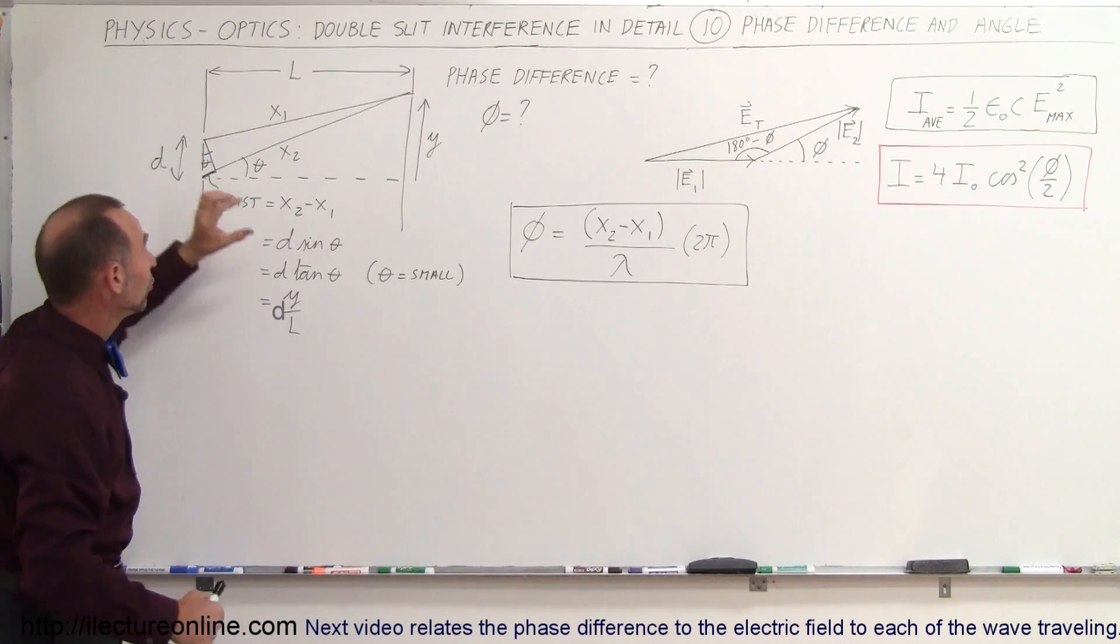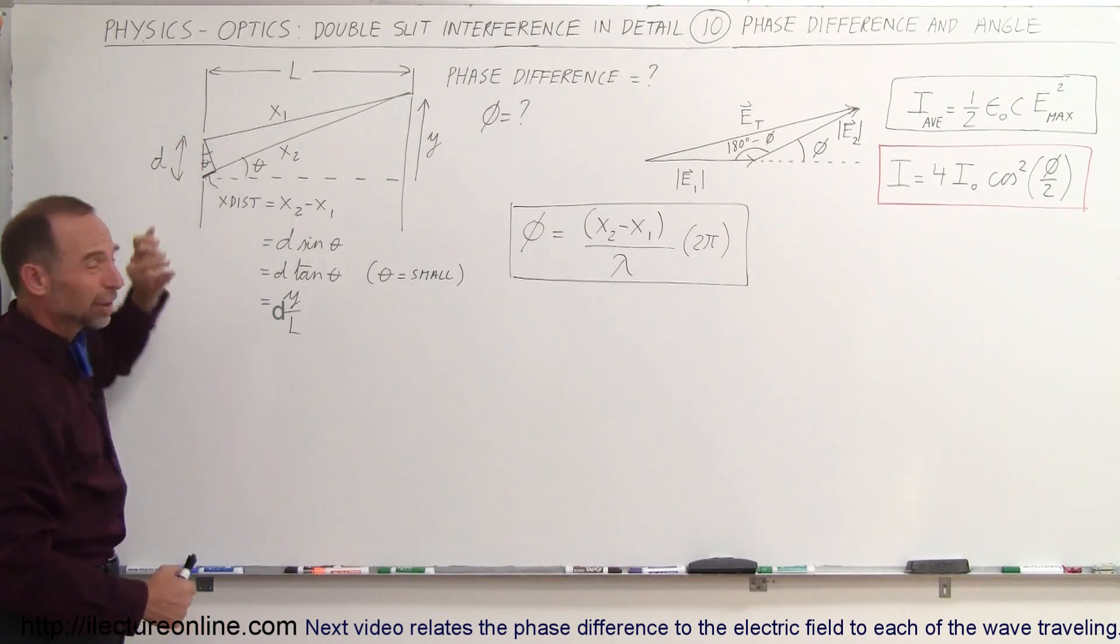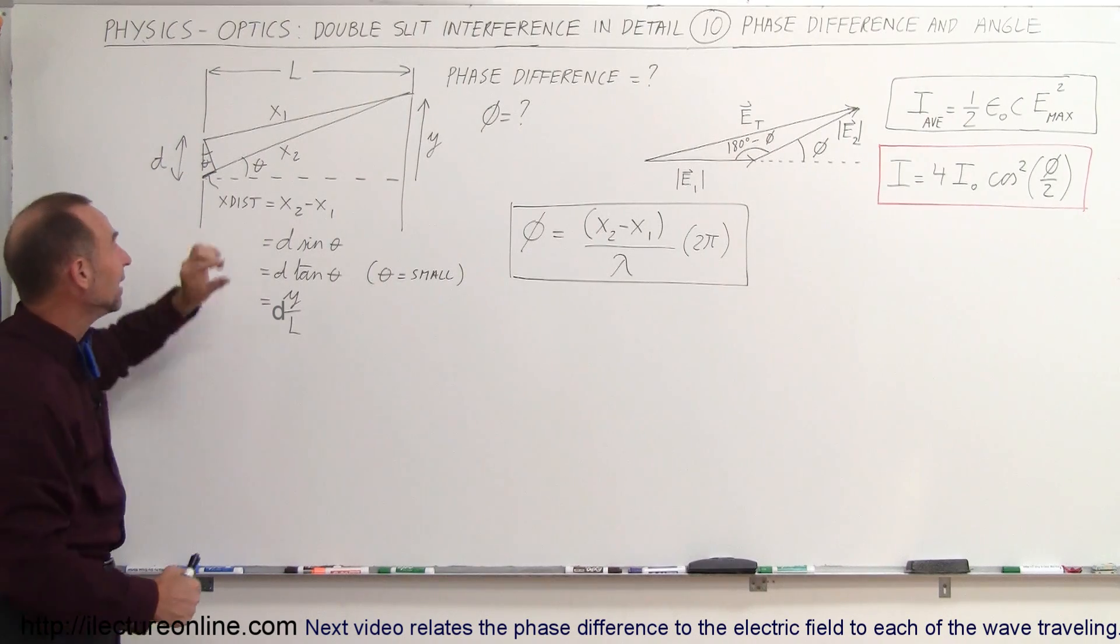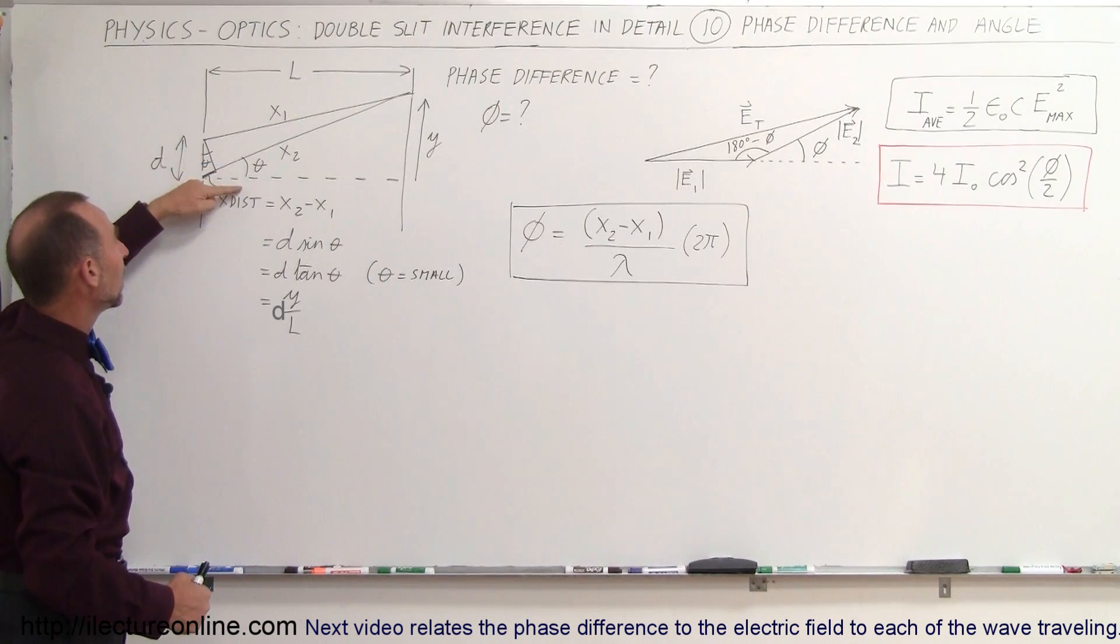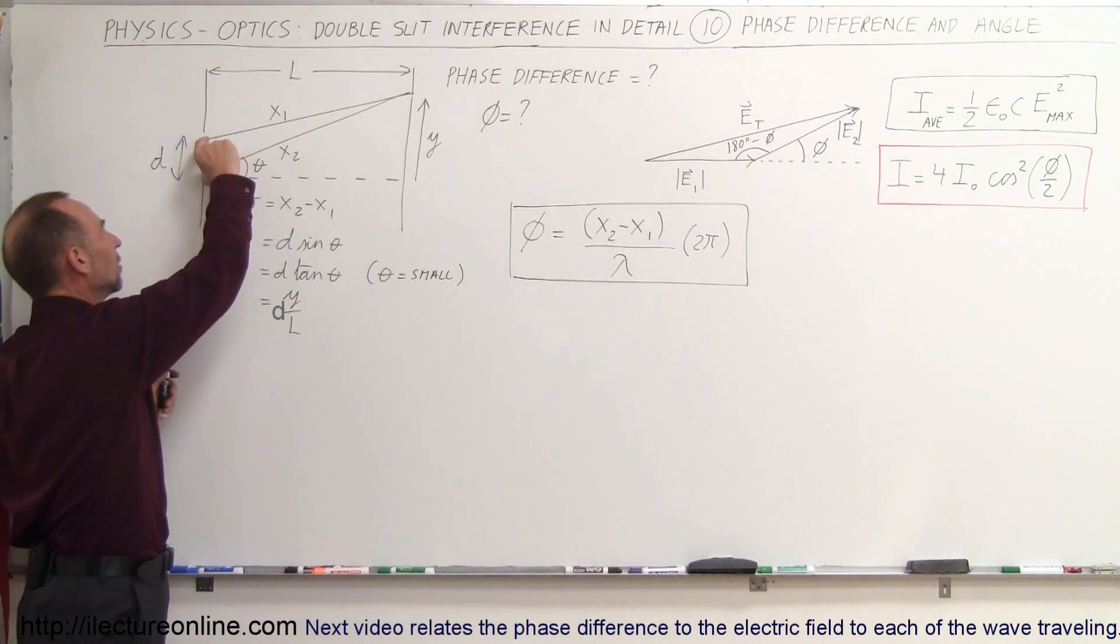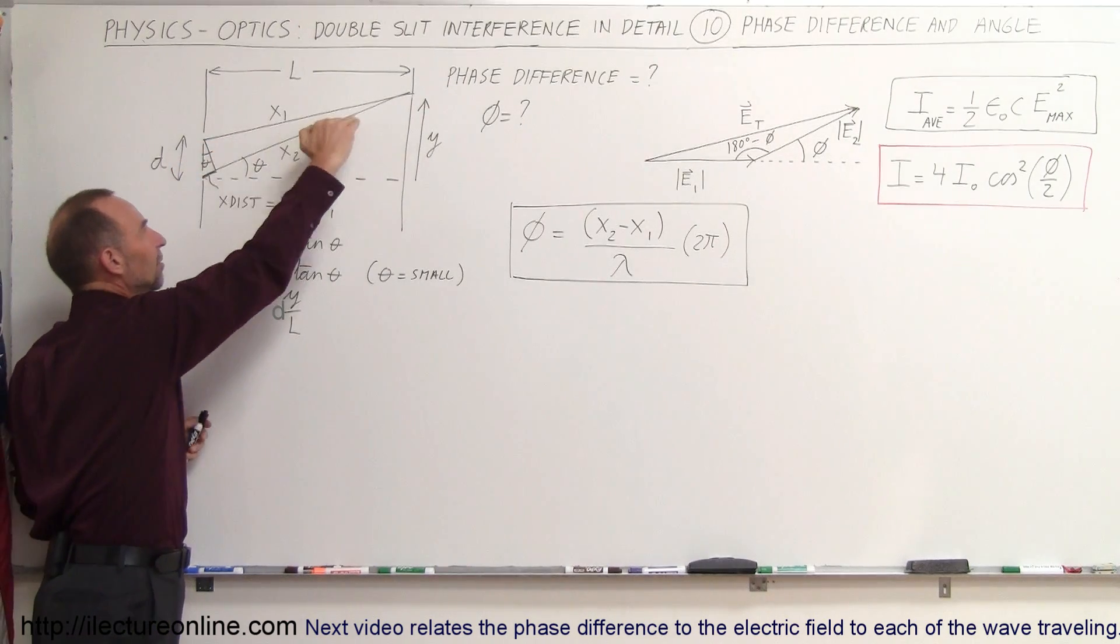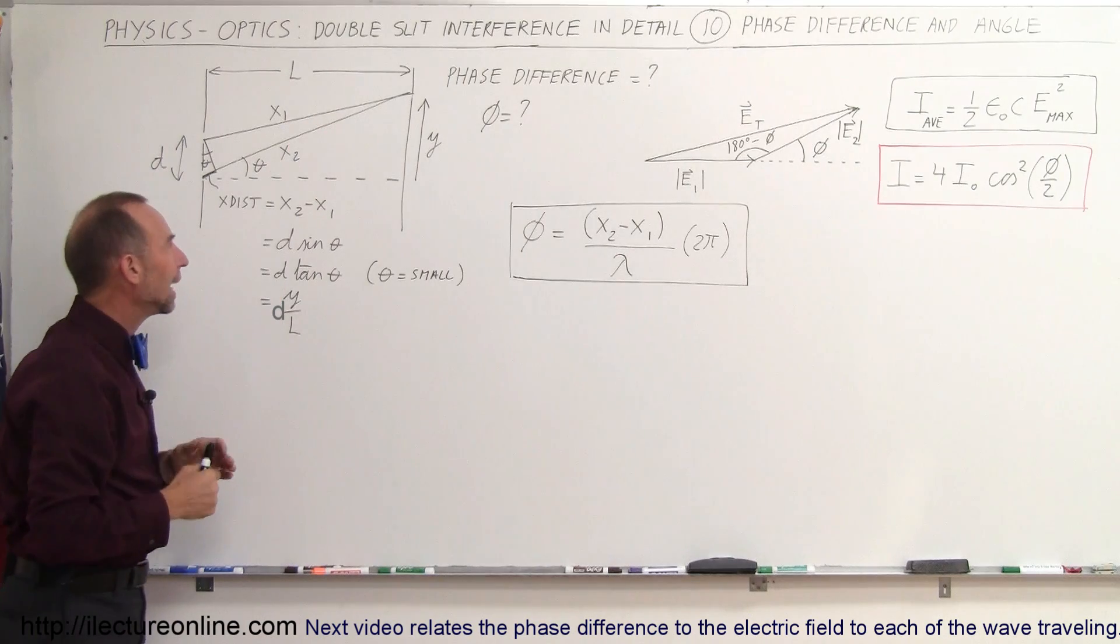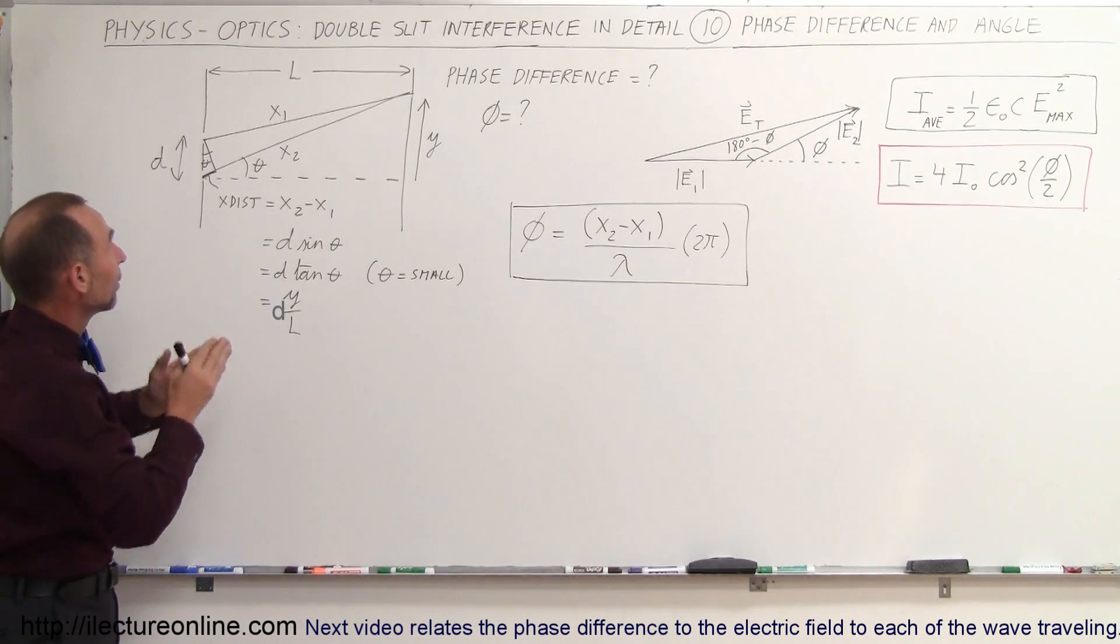Again, remember that these two waves are very, very close together because the slit distance is very tiny. So theta to the bottom wave and theta to the top wave is basically the same thing. You can see that these are so close together that it's simply a single angle because those two lines are parallel to each other.